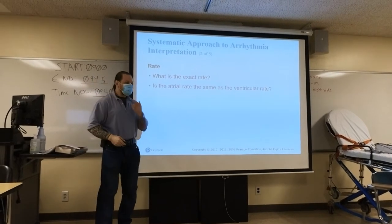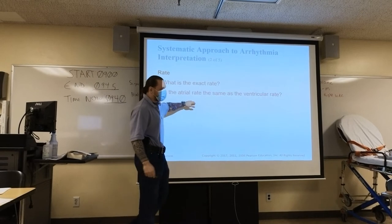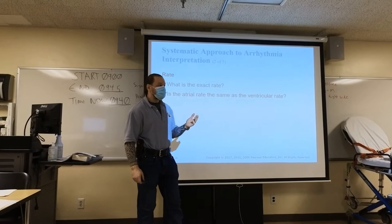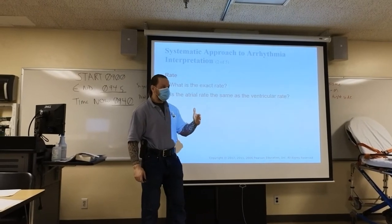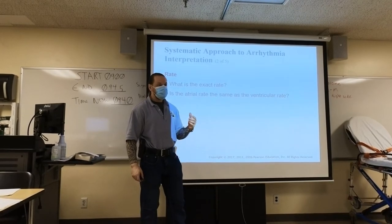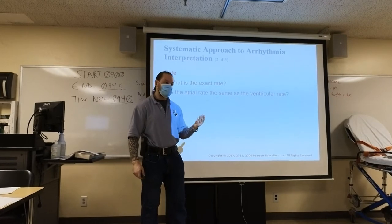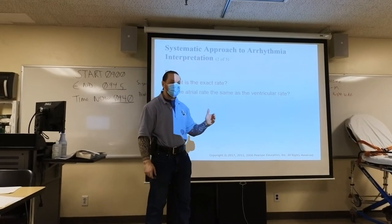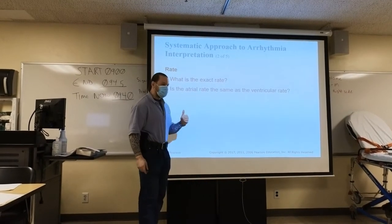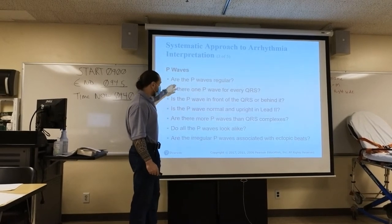Rate: we want to know the exact rate, and we're going to do the rate for both the atria and the ventricles. We have rhythms like atrial flutter where the ventricular rate is maybe 60 but the atrial rate may be 350. In a third degree heart block, you may have an atrial rate of 80 and a ventricular rate of 40. So it's a good idea when you're starting out to have both the atrial rate and the ventricular rate.